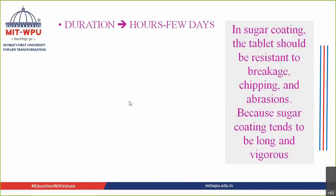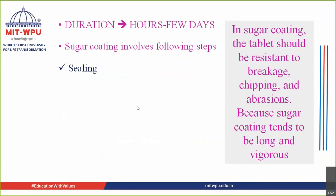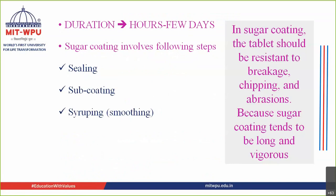The duration for sugar coating goes on for hours — approximately five to six hours, or it can go up to one to two days. The process of sugar coating involves five steps: sealing, sub coating, syruping, finishing, and lastly polishing.